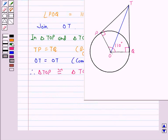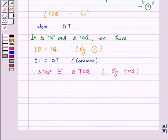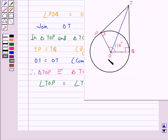Hence, angle TOQ is equal to angle TOP by CPCT. Hence, OT is the angle bisector of angle POQ and PTQ. Therefore, angle TOP is equal to angle TOQ is equal to 55 degrees, as angle POQ is 110 degrees.